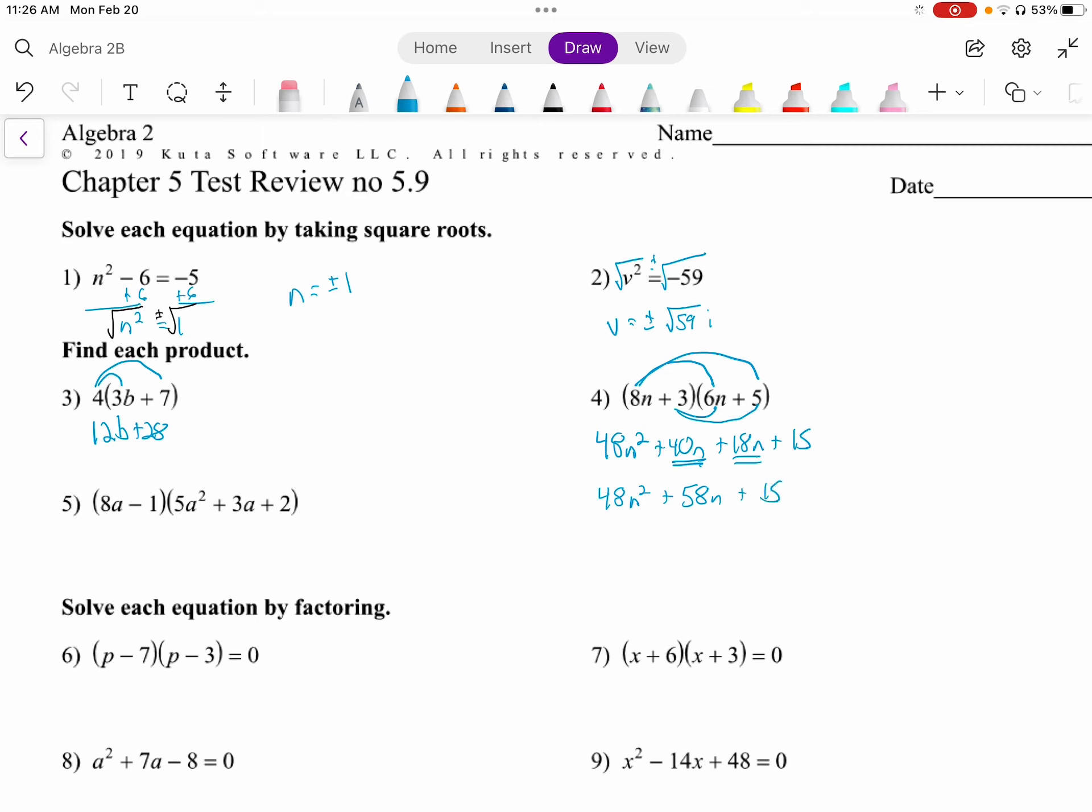And this last one, each term in the first factor needs to be multiplied by each term in the second. So we're plus 24a squared plus 16a. And then negative 1, it needs to be multiplied by all three of these. So we have minus 5a squared minus 3a minus 2. And then we look for like terms. There's no other a cubed, so it's 40a cubed. There's an a squared and an a squared, so that is 19a squared. We have a 16a and a negative 3a, which is 13a. And then finally, we have the minus 2.